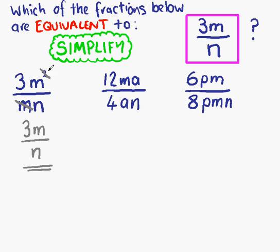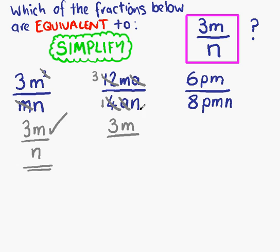Looking at the second fraction: on the top line we have an a multiplying, which can be cancelled with the a multiplying on the bottom. We have an m on the top and n on the bottom, which we can't simplify. But we do have 12 on the top and 4 on the bottom, which can be simplified — 4 goes into 4 once, and 4 goes into 12 three times. That leaves us with 3m on the top line and 1 times n, which is just n, on the bottom line. After simplification we have 3m over n, which is the same as our original fraction, so this one is also equivalent.